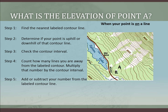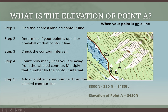Now we're going to add or subtract that number from the labeled contour line. Our original was 8,800 feet. And since we're downhill, we're going to subtract 320 feet, and we get that this line here, and thus point A, is 8,480 feet.